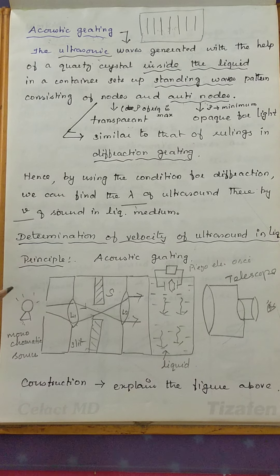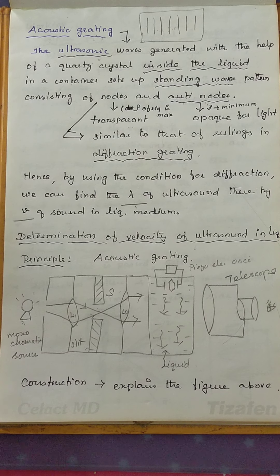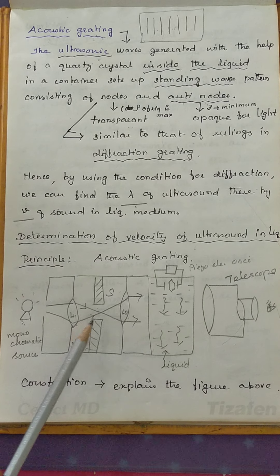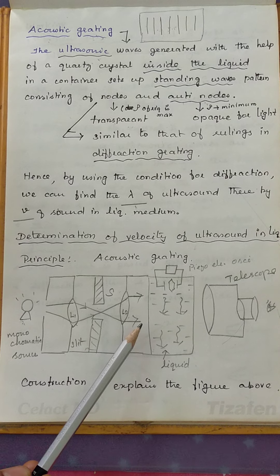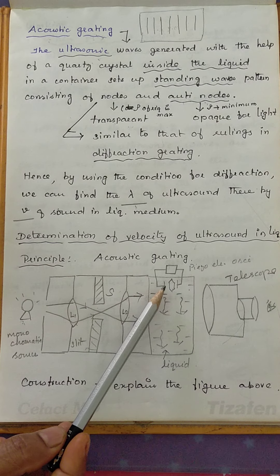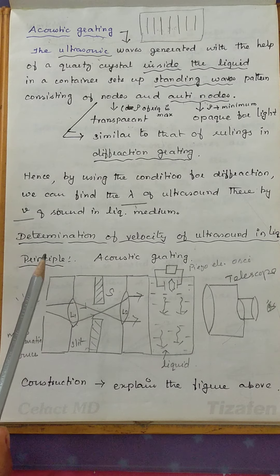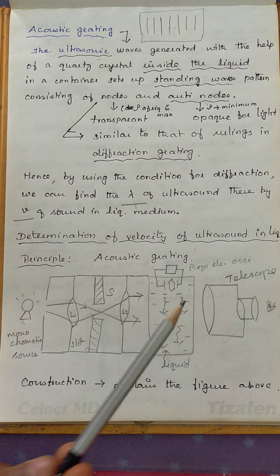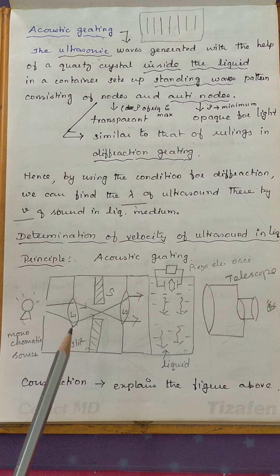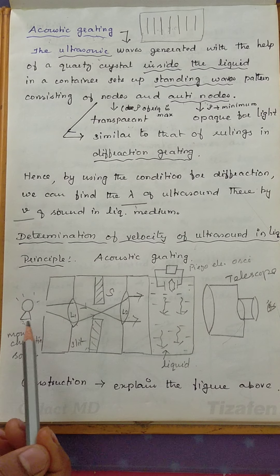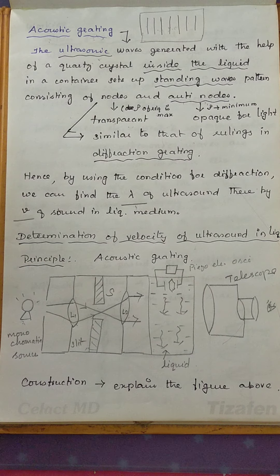By explaining this figure, we will understand the construction. The apparatus consists of a monochromatic light source placed between a lens system and a slit in order to render the beam parallel. There is a glass tank container which holds the liquid. A piezoelectric crystal is connected to a piezoelectric oscillator circuit, and a telescope is used to view the diffraction pattern. Lenses L1 and L2 are placed with a slit in between to render the beam parallel.